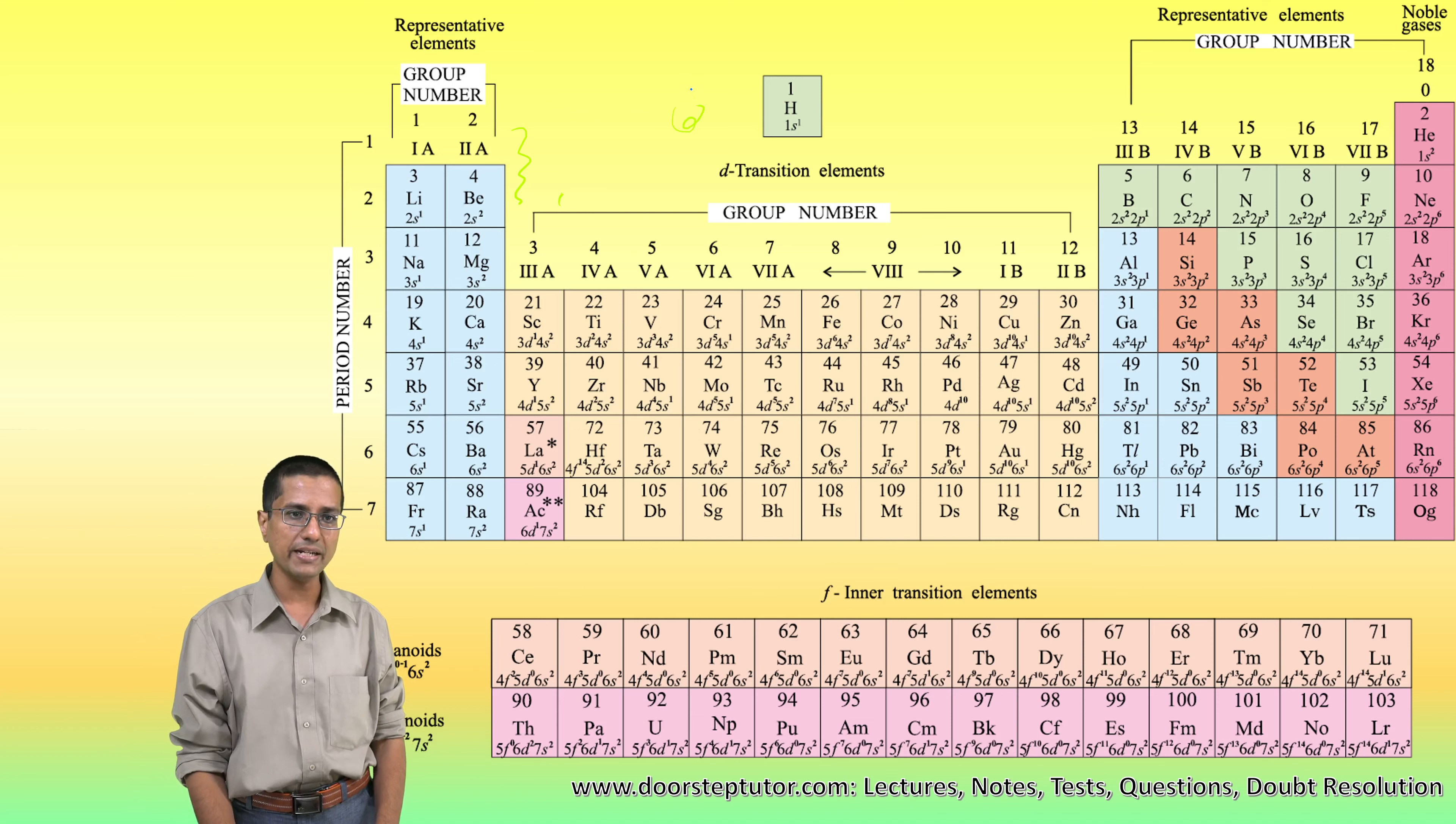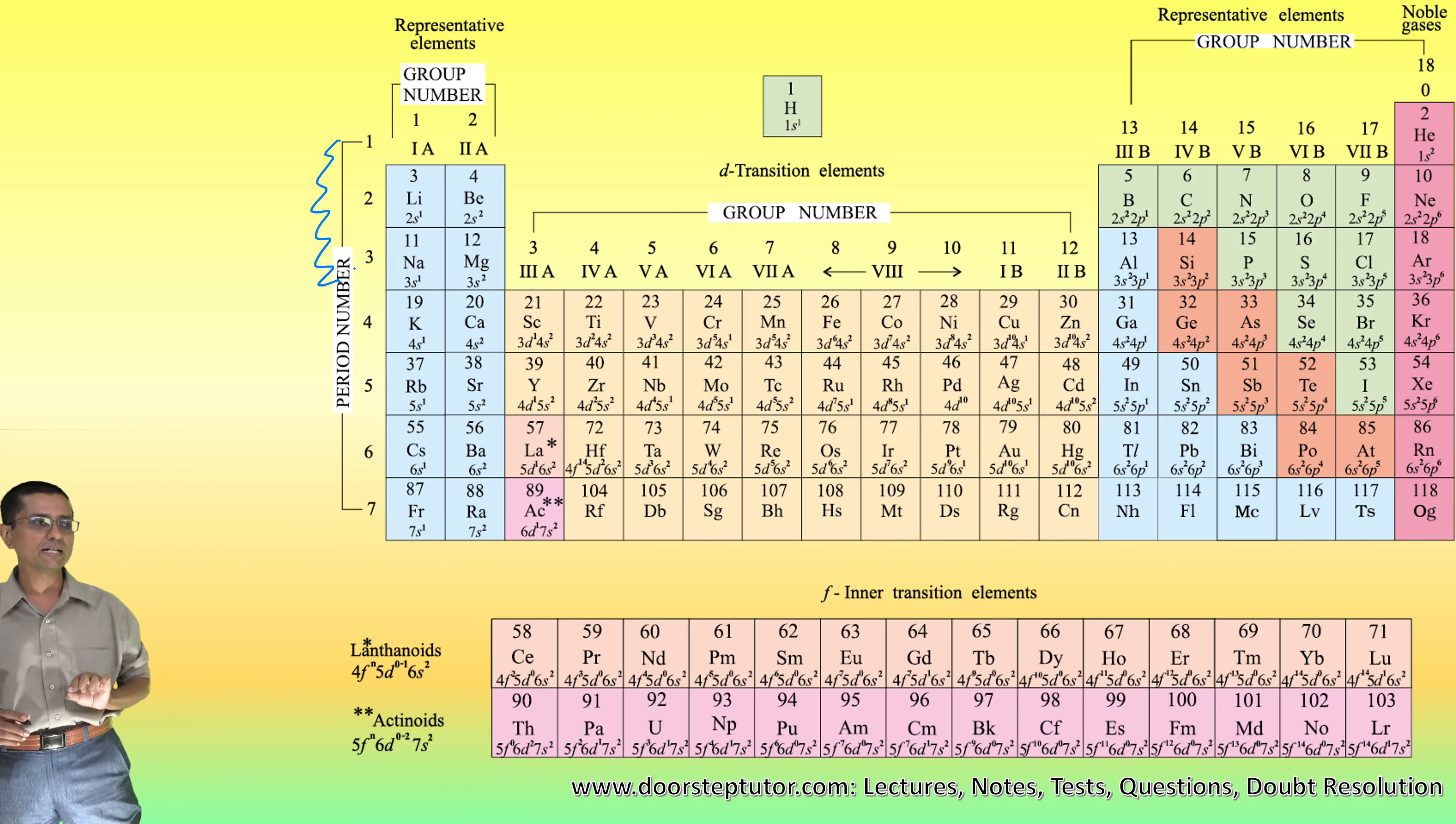Now that statement is actually correct only for these three periods, the first, second and third period of the periodic table. For these three periods, the electrons responsible for the chemical reactions lie in the outermost s and p orbitals.